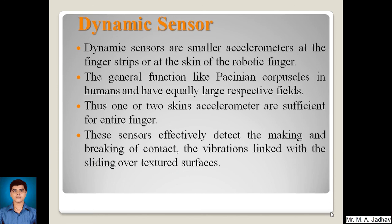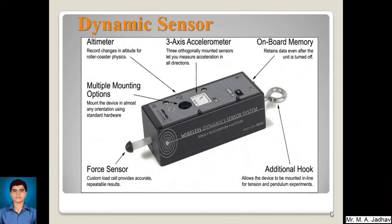This is the pictorial view of a dynamic sensor. It has different components: a force sensor, multiple mounting options, an altimeter, a three-axis accelerometer, on-board memory, and an additional hook for clamping.